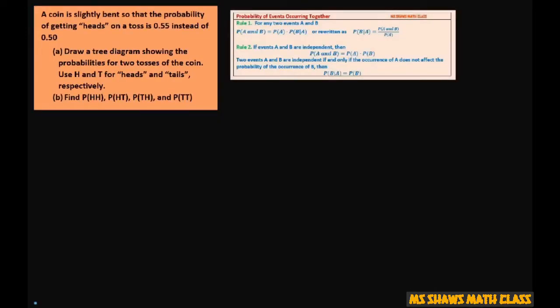You're just tossing two coins. So we have heads and tails. Now the heads is 0.55, therefore the tails has to be 0.45. These two numbers have to add up to one.